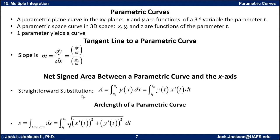We have a net signed area between a parametric curve and the x-axis, and there's a straightforward substitution. If we have Y as a function of X, we integrate with respect to X from X1 to X2. If these are given in terms of the parameters, then Y of X becomes Y of T, and dx becomes x prime of T dt, and we go from T1 to T2.